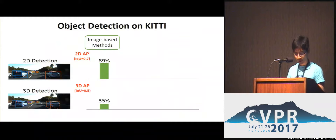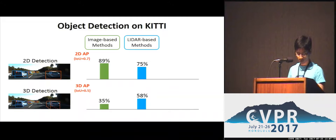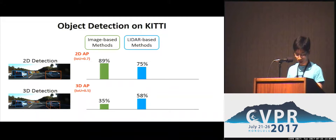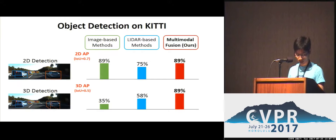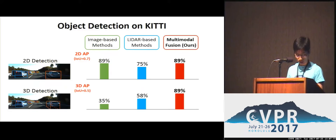Although image-based methods achieve accurate 2D detections, their performance on 3D detection is much worse. On the contrary, LiDAR-based methods are more accurate in 3D detection, but they have much lower 2D AP than image-based methods. In this paper, we propose a new approach by fusing LiDAR and camera data to achieve state-of-the-art performance on both 2D and 3D object detection tasks.